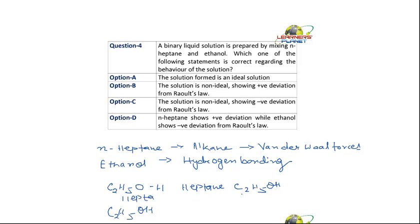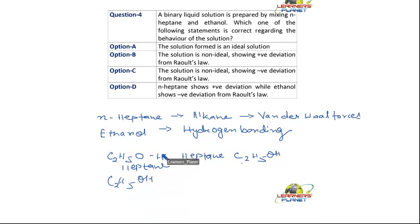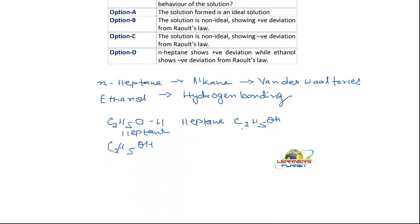So in this case what will happen to the vapor pressure? Now these molecules of ethanol which were previously hydrogen bonded. Say this is C2H5OH. There will be OHC2H5. So these molecules were hydrogen bonded.